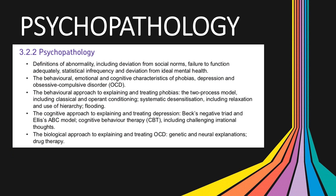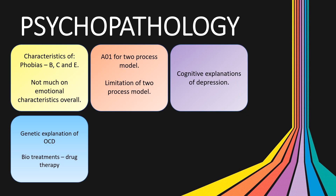The final area is psychopathology. I'd expect to see something on the characteristics of phobias, as it hasn't been examined — the characteristics of depression and OCD have both come up. In reference to those three disorders, there's been nothing specific on emotional characteristics at all. The two-process model as an explanation of phobias has only ever been mentioned as a limitation question, so I think it's highly likely to see an 8-mark or maybe even a 16-mark on the two-process model.